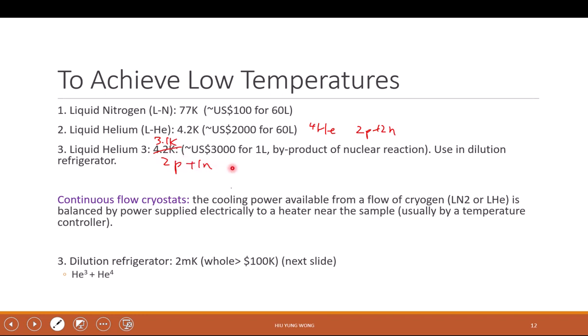But this is very expensive. I'm talking about 1 liter, not 60 liters, it's about $3,000 US. And they are the by-product of nuclear reaction. So if I'm right, someone told me that in US there are only two suppliers. One of them is the Fermilab, which did a lot of nuclear reactions. And if you are with the US, you get half the price. If outside, it's double, because it's very rare.